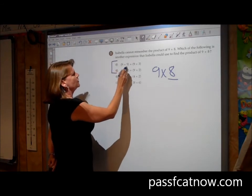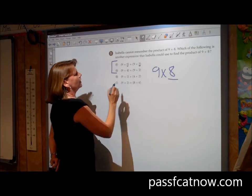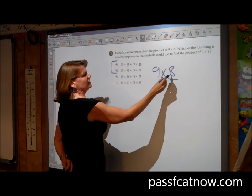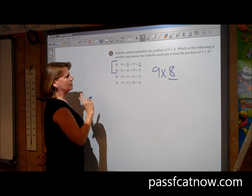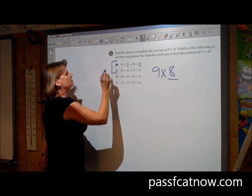I'm looking at 9 times 5 and 9 times 3. I know that 5 plus 3 makes 8. Isabella could do that and come up with her answer. So the correct answer would be the first one.